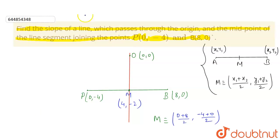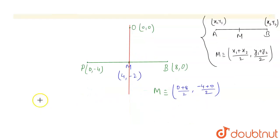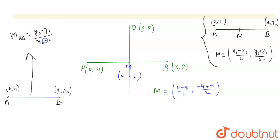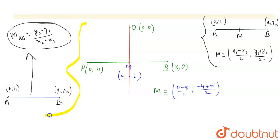To find the slope, there is a concept: if you have a line and you know two points — point A which is (x1, y1) and point B which is (x2, y2) — then the slope of line AB will be (y2 - y1) / (x2 - x1). This is the concept we will use.